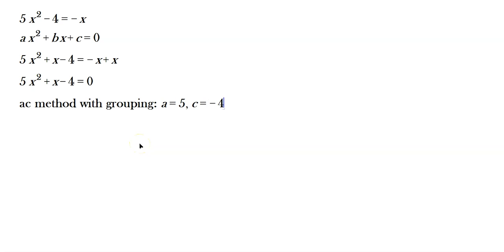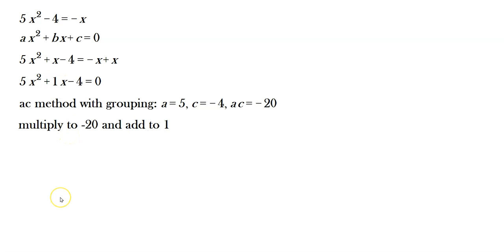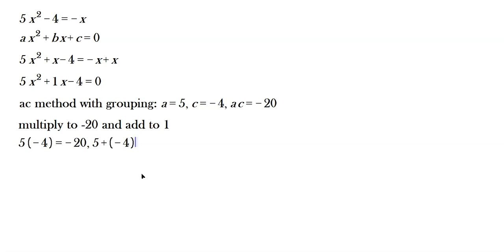A is 5, C is negative 4, so AC equals negative 20. You look for two numbers that multiply to negative 20 and add to 1 — because 1 is the coefficient of the middle term. Some people can guess the factored form directly. If we try 5 and negative 4: 5 times negative 4 is negative 20, and 5 plus negative 4 equals positive 1. That's the right combination.